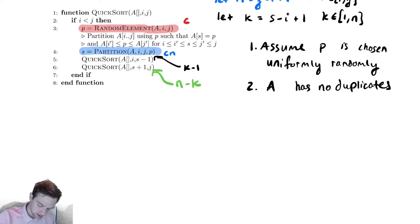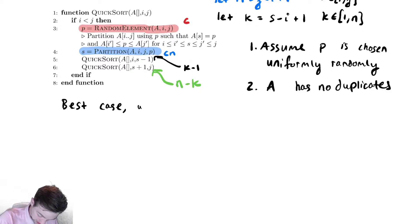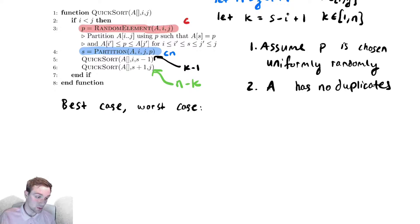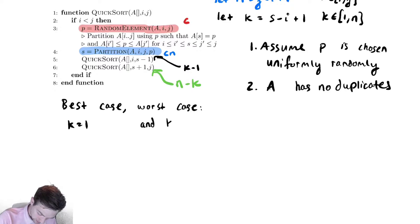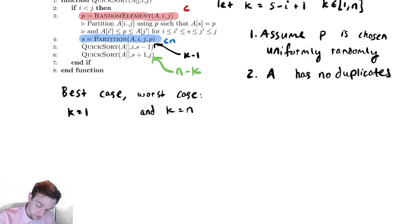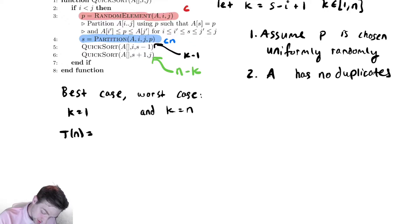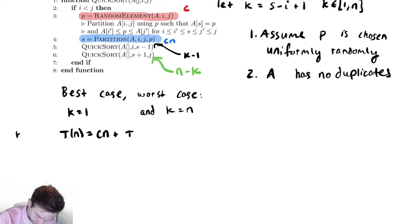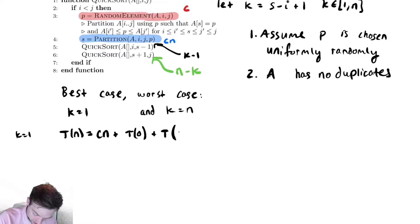Let's think about what the best and worst cases could be. One might naturally think that k equals 1 and k equals n are the extremes. Let's see what happens: our non-recursive work is cn, so T(n) equals cn plus T(k minus 1). Plugging in k equals 1 gives T(0) plus T(n minus 1). For k equals n, we get T(n) equals cn plus T(n minus 1) plus T(0).